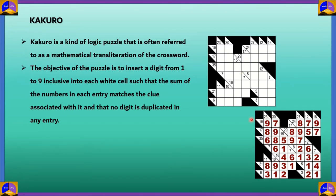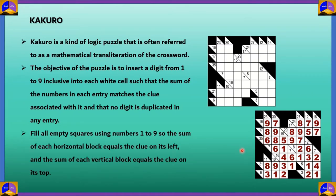9 plus 7 gives you 16, 9 plus 8 plus 6 gives you 23, along the row and along the column, respectively. What we do is we fill all empty squares using the numbers 1 to 9. The sum of each horizontal block equals the clue on its left, and the sum of each vertical block equals the clue on its top.